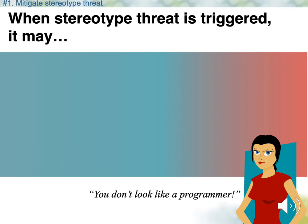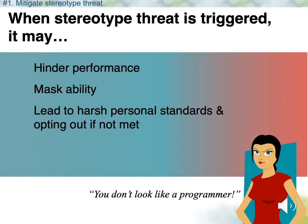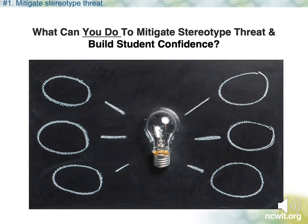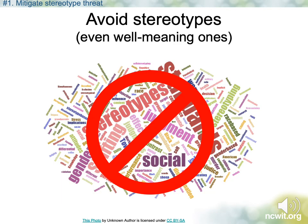Some people theorize that stereotypes about who does computing don't just make the fields less attractive for individuals who don't match those stereotypes, but that they may have more subtle effects on their performance and motivation. Research has shown that stereotype threat can hinder performance, maskability, lead to harsh personal standards, opting out if those standards aren't met, and affect choices and aspirations. So what can you do to mitigate stereotype threat and build student confidence? First, and perhaps the most obvious, is to simply avoid invoking stereotypes at all — don't make stereotypes salient. Consider the examples you use in class, how you interact with different students, and ways that you may inadvertently highlight stereotypes about groups in your communications.